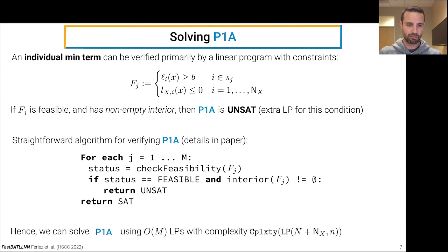So as a result, we can solve problem 1A using big O of M LPs, and each LP has a number of constraints equal to the number of local linear functions plus the number of half-spaces that specify the input constraint P_X. The dimension of that LP is, of course, the same as the input to the neural network lowercase n. So that's problem 1A.